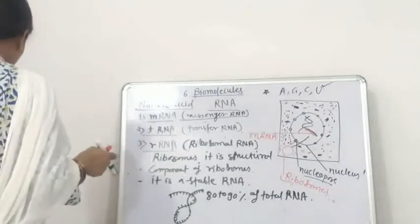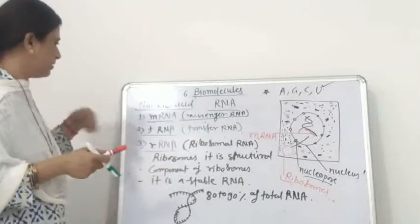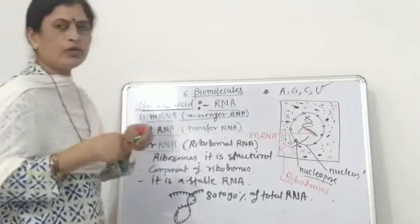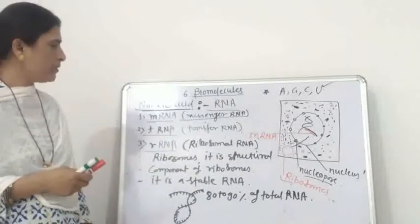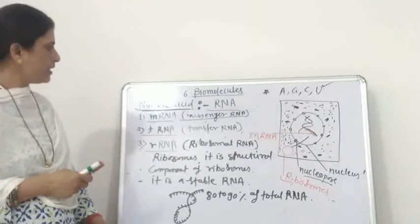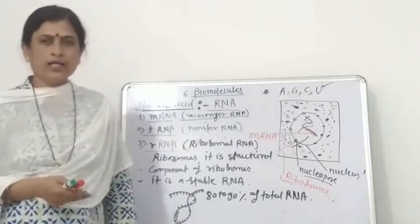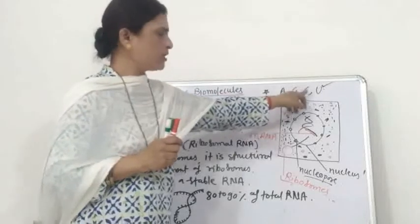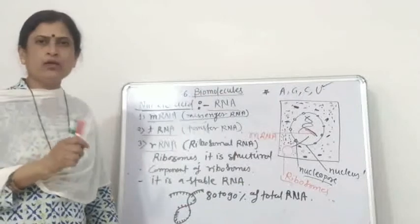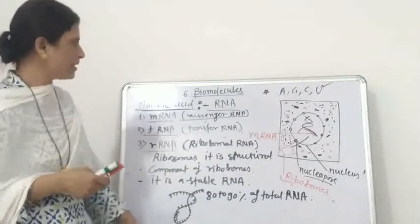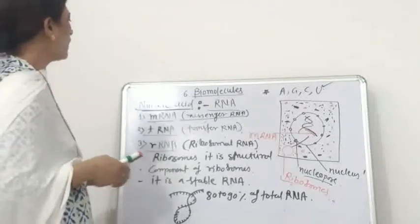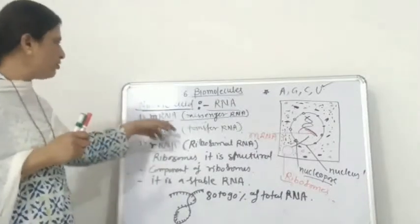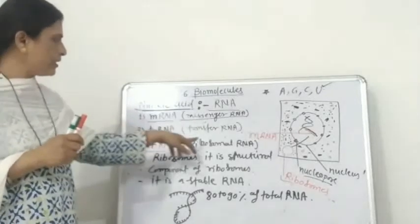In this lecture, we studied the different types of RNA and their functions. RNA is ribonucleic acid — it is a single-stranded structure, but in some cases it is a double-stranded structure. In most organisms it is not a hereditary material, but in some viruses like tobacco mosaic virus it is. The nitrogenous bases are adenine, guanine, cytosine, and uracil. The ratio of purines and pyrimidines is not one-to-one because it is single-stranded. RNA helps in protein synthesis and is classified into three types: mRNA (messenger RNA), tRNA (transfer RNA), and rRNA (ribosomal RNA).